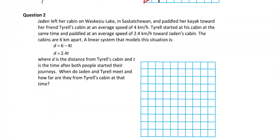Here's a word problem: Jaden left her cabin at Waskasieu Lake in Saskatchewan and paddled her kayak toward Tyrell's cabin at 4 km/h. Tyrell started at the same time paddling toward Jaden at 2.4 km/h. The cabins are 6 km apart. A linear system modeling this situation is given, where D is the distance from Tyrell's cabin and T is the time after both started. When do they meet, and how far are they from Tyrell's cabin at that time?